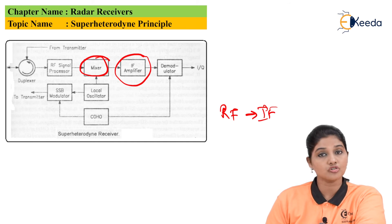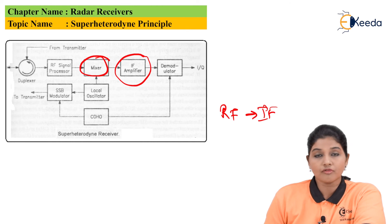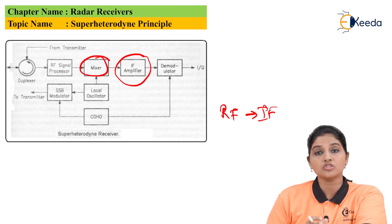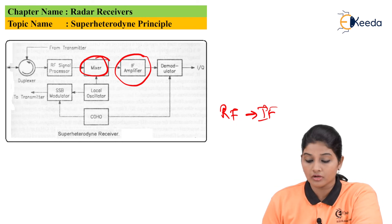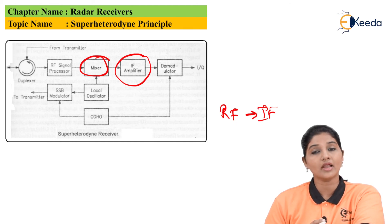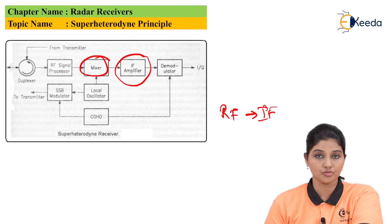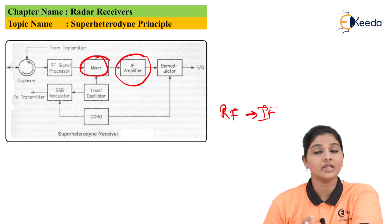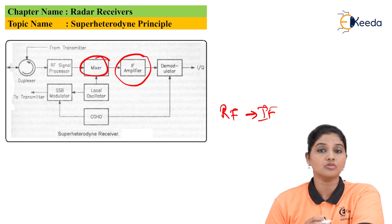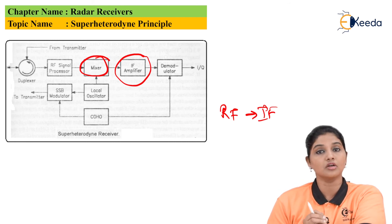In modern radar systems, most receivers use threshold detection. A threshold level is set, and when the received echo signal crosses that level, it indicates the presence or absence of the object. A diplexor is used to allow the antenna to serve either as a transmitting antenna or as a receiving antenna when a single antenna is used for both transmission and reception. When controlled by the receiver unit, the diplexor allows the antenna to receive the echo signal along with some noise. The noise is either generated internally or may enter through the antenna system. Since the radar operates at high frequency, very little noise enters through the antenna terminal.